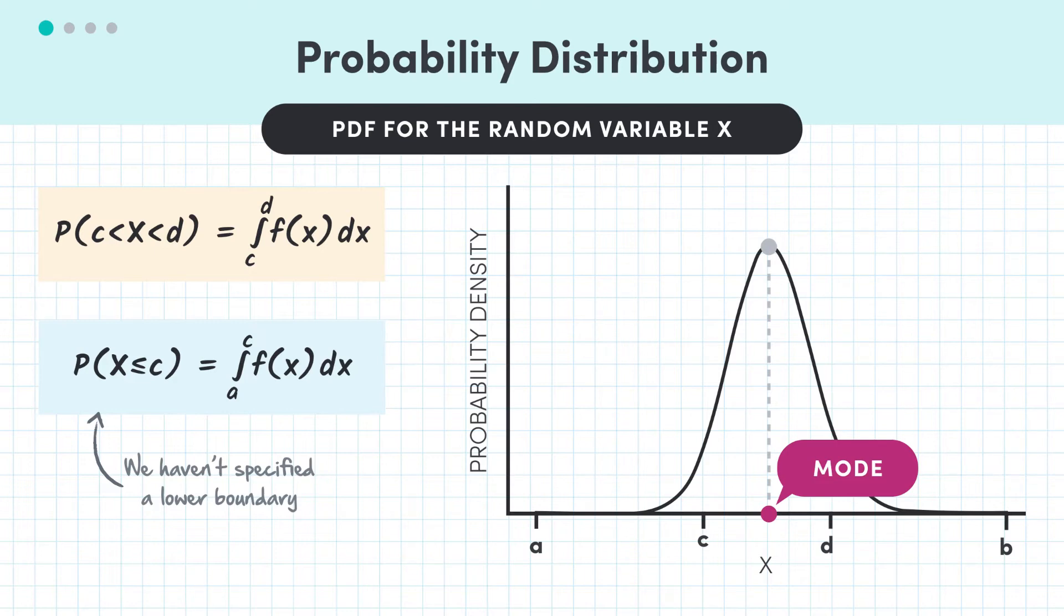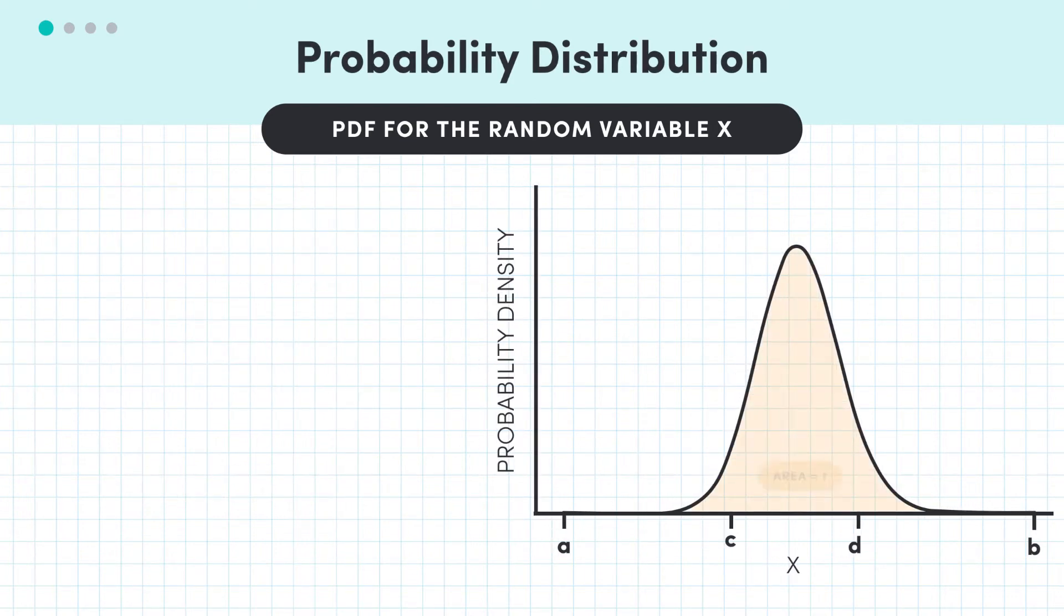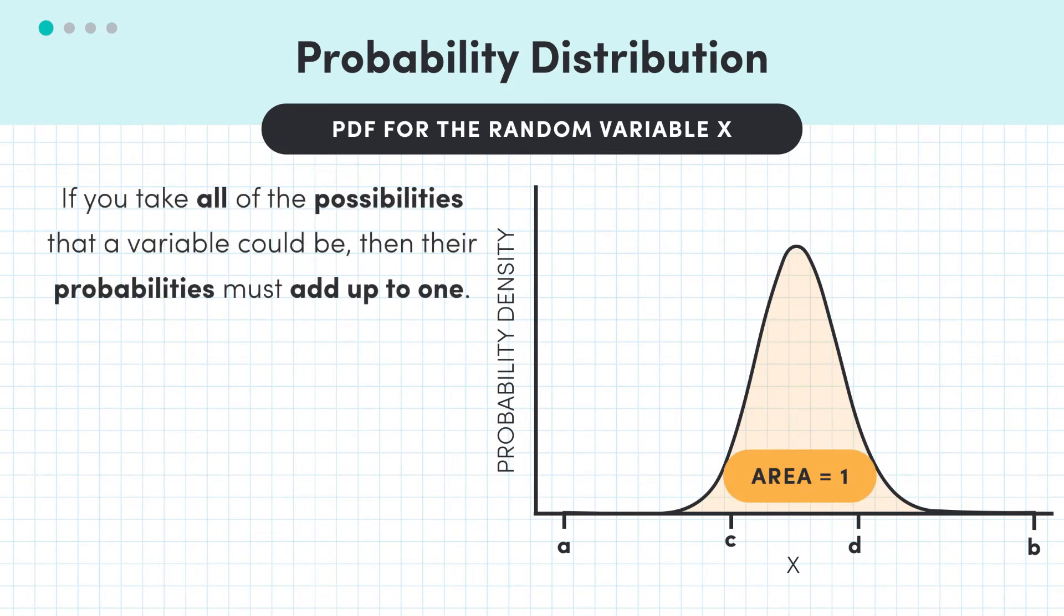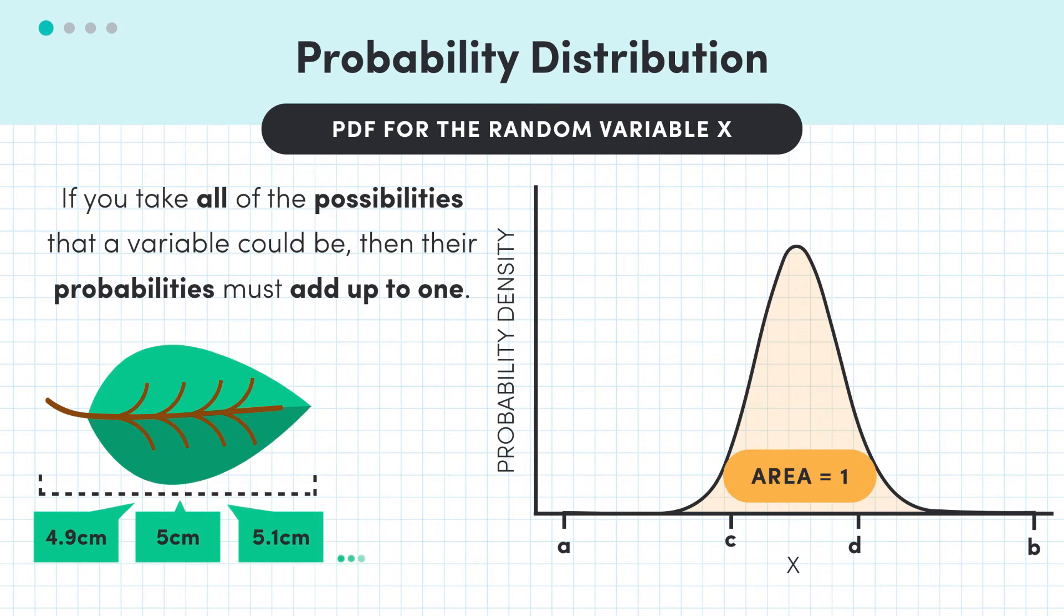One final point to explain while we're talking integrals is why the area under a PDF equals 1. Essentially, it's because the area under the PDF represents probability, and if you take all the possible outcomes that the variable could be, then the probabilities must add up to 1. I mean, let's say that you took all the possible lengths that a leaf could be. The probability of our leaf being one of those lengths is 1. We have every possibility, of course it has to be one of them, so the probability is 1.